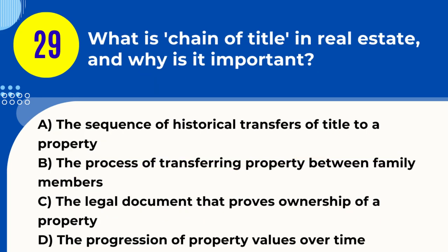Question 29. What is chain of title in real estate and why is it important? A. The sequence of historical transfers of title to a property. B. The process of transferring property between family members. C. The legal document that proves ownership of a property. D. The progression of property values over time. Answer: A. The sequence of historical transfers of title to a property. Explanation. The chain of title in real estate is the sequence of historical transfers and records of ownership of a property. It's important because it ensures clear title, showing there are no disputes or unknown claims to the property.